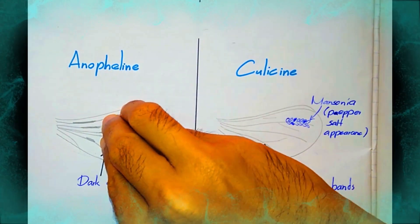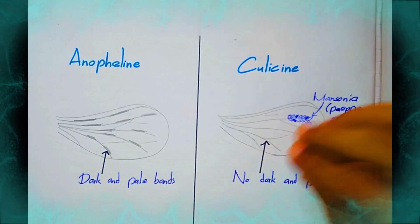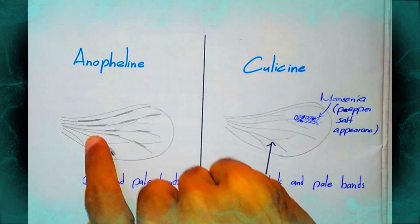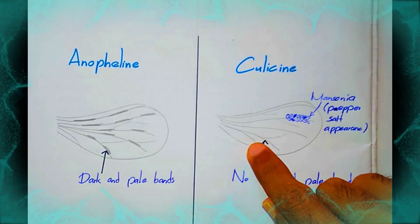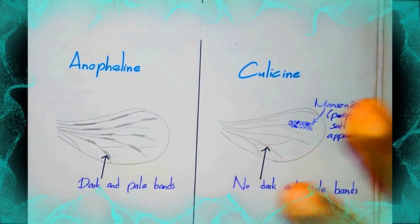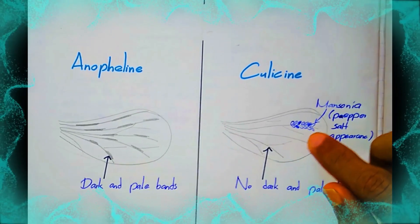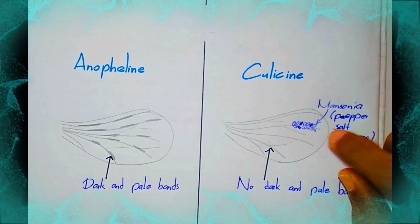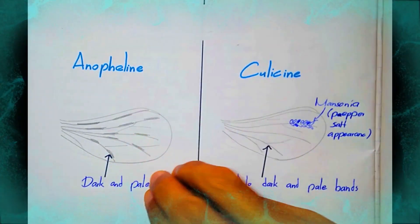This is anopheline and culicine mosquito wings. In anopheline mosquitoes, the wing has dark and pale bands — you can see the dark and pale bands. Culicine mosquitoes have no dark and pale bands. However, Mansonia mosquitoes have a pepper-salt appearance on their wings. Now you can differentiate anopheline and culicine mosquitoes using their wings.